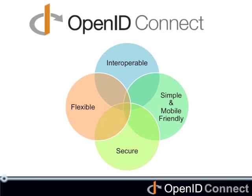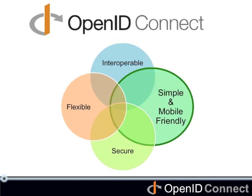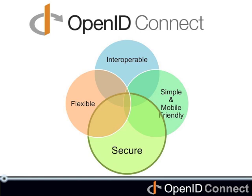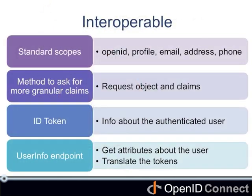That's OpenID Connect. It's interoperable, simple and mobile-friendly, secure, and flexible. To be interoperable, we have to define a standard way of requesting and responding to claims. So we have defined standard scopes, a method to ask for more granular claims, an ID token, and a UserInfo endpoint from which you can get the attributes as well as the translated tokens.